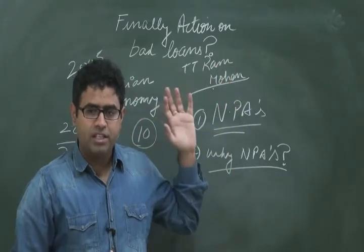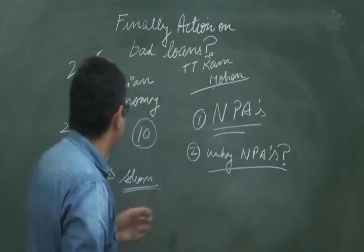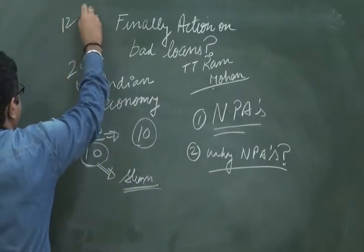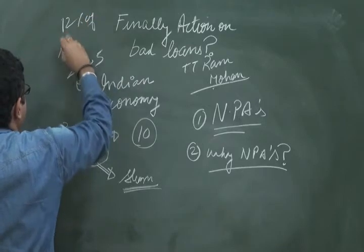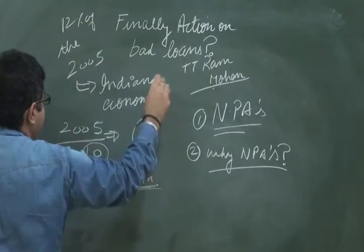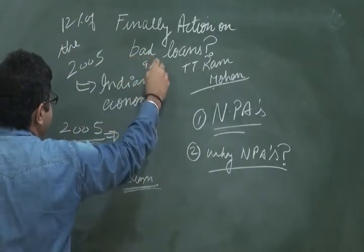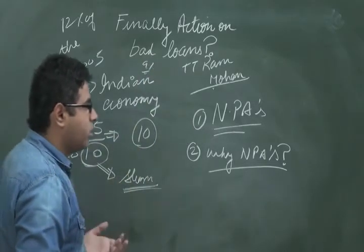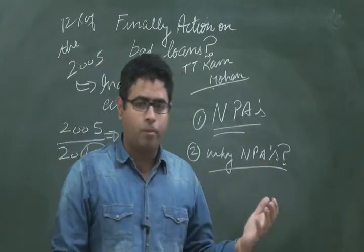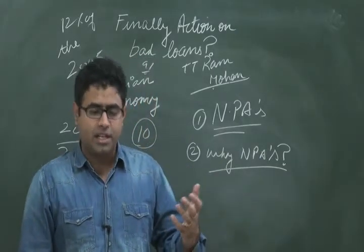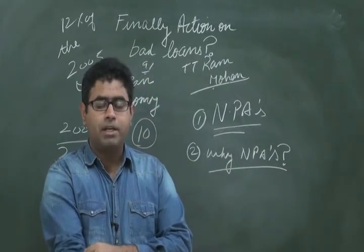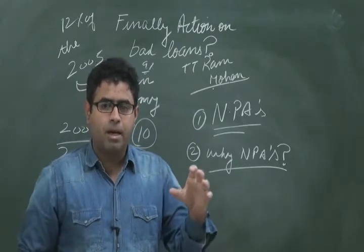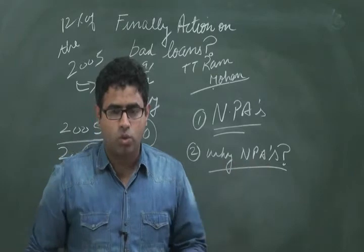In order to rectify this entire situation of NPAs - NPAs are almost about 12 percent of the total loans. This year's economic survey has put the figure to nine percent. So 12 percent of total loans that banks have given to corporations, institutions, and individuals - there are chances that they might not be returned. There are chances that there might be a kind of default on these loans.